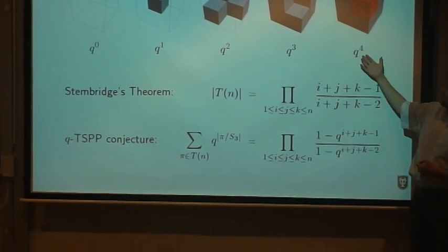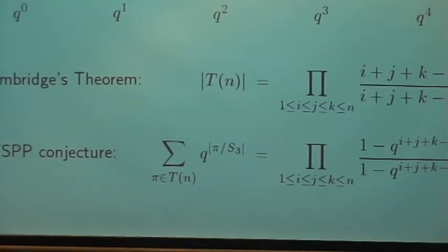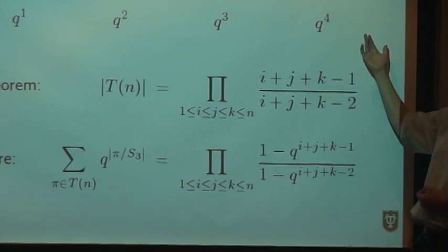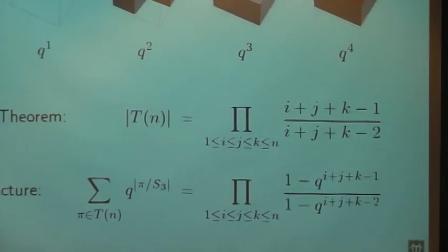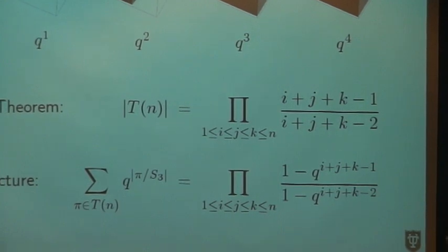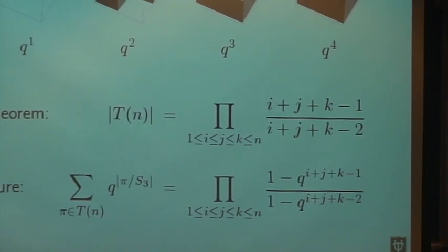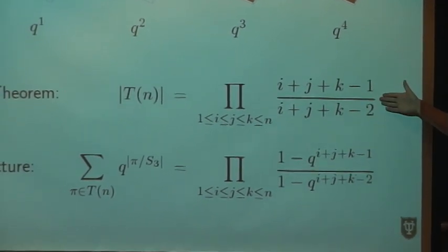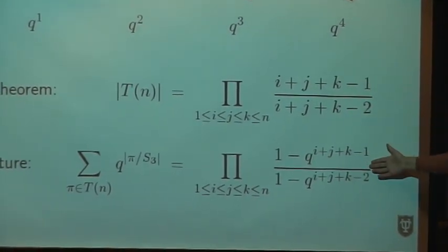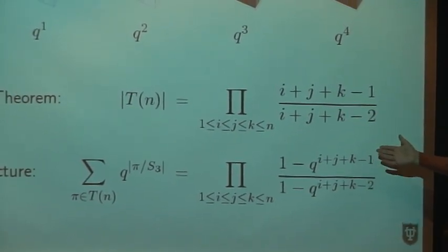This polynomial is the q analog of the counting function. If we put q equals one, we get five, so we get our original information, but with this polynomial we have more information - we get the number of totally symmetric plane partitions plus the number of orbits. This is the q equals one case, the standard case. This is the q case, and the two formulas are really very similar.